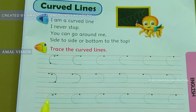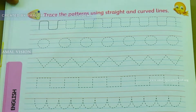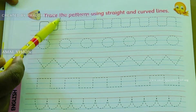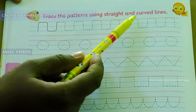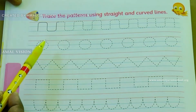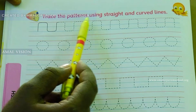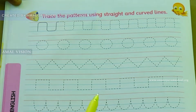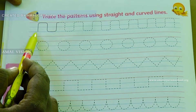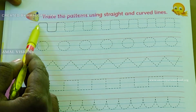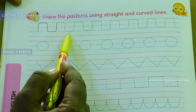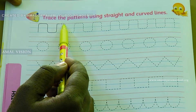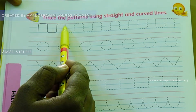Now, we are going to move on to the next page. This is page number 12. Shall we read the heading now? Keep your finger in the red color line. Trace the patterns using straight and curved lines. So, we are going to trace it using straight and curved lines. They have done one for you. This is straight line and this is curved line. Here they have given some dotted lines, so keep your pencil on the dotted lines. The red line is curved line. This is curved line and this is straight line.